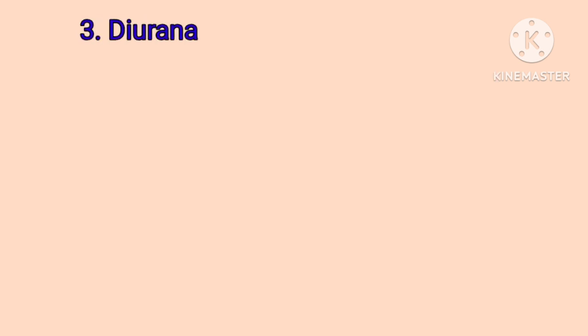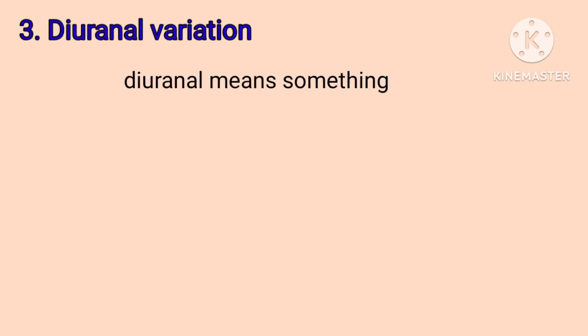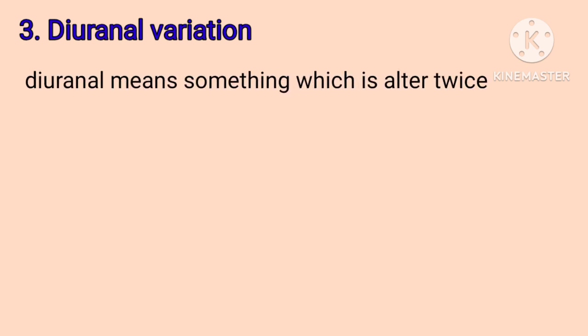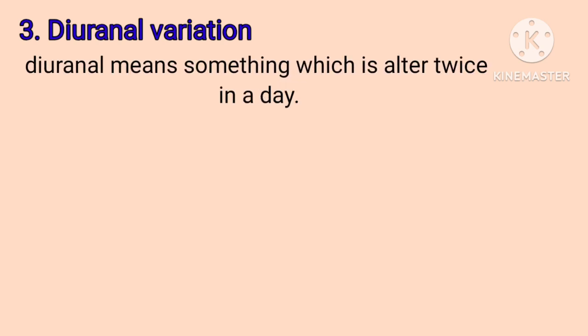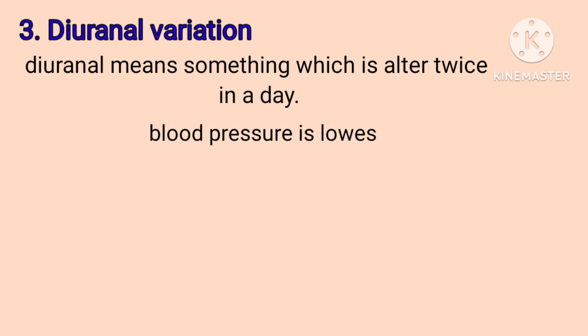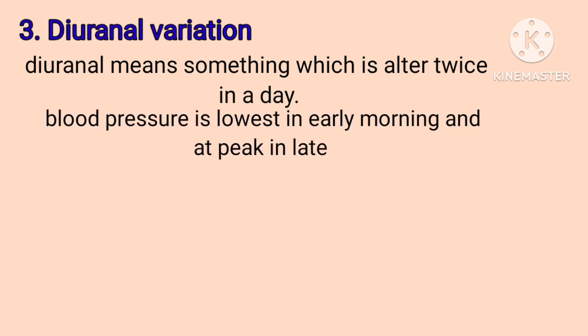The third one is Diurnal Variation. Diurnal means something which is altered twice in a day. Blood pressure is lowest in the early morning and peaks in the late afternoon.